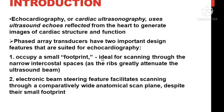One difference is the echo probe's electronic beam steering features, which facilitate scanning of different anatomy areas from different sides of the heart. We need to look from different sides of the heart to identify structural abnormalities using the phased array probe — so we call it an echo probe or phased array probe, different from the abdominal probe or the linear probe.